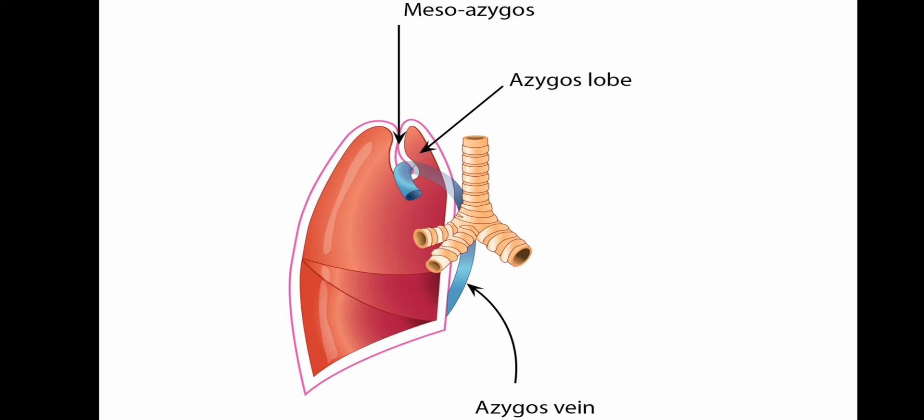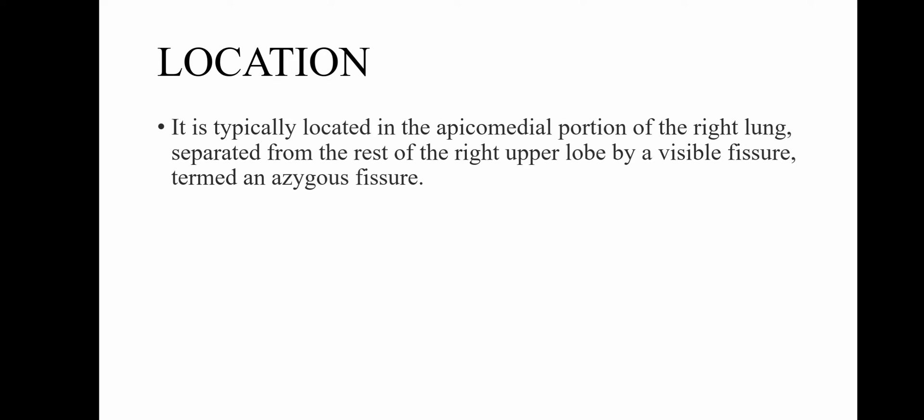This image shows the presence of the azygous lobe in a schematic diagram of the lung. The azygous lobe is typically located in the apico-medial portion of the right lung, separated from the rest of the right upper lobe by a visible fissure called the mesozygous fissure or the azygous fissure.